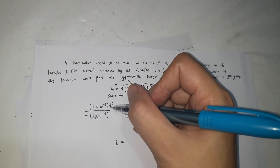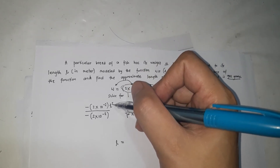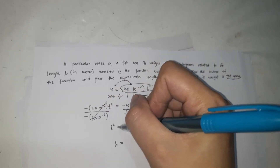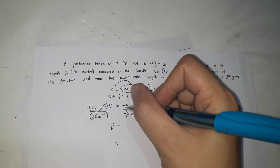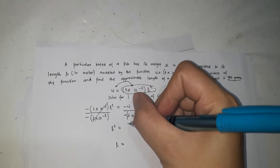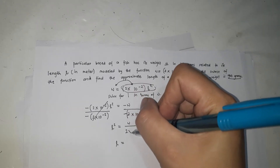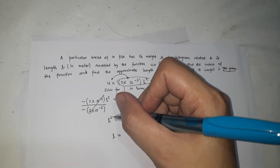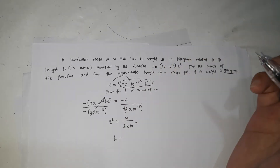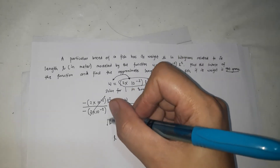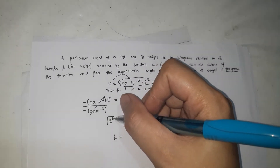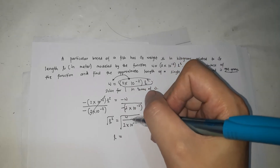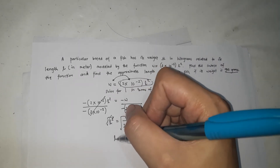Dividing both sides by −2 × 10^(−2) cancels that coefficient, leaving l² = w / (2 × 10^(−2)), because negative divided by negative gives positive. To remove the square from l², we take the square root of both sides — the square root undoes the square — giving l = √(w / (2 × 10^(−2))).